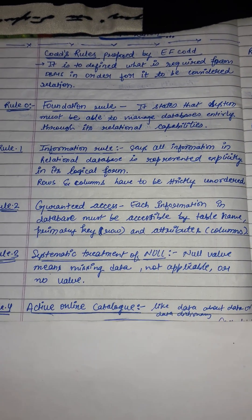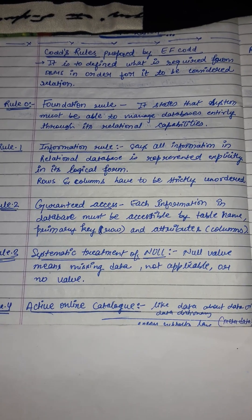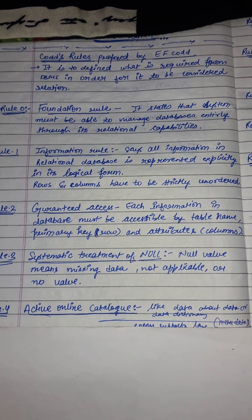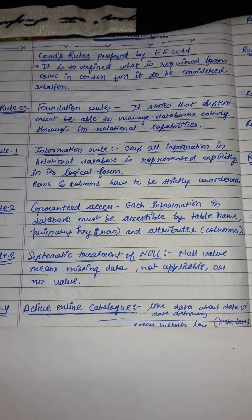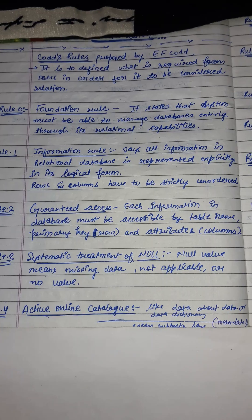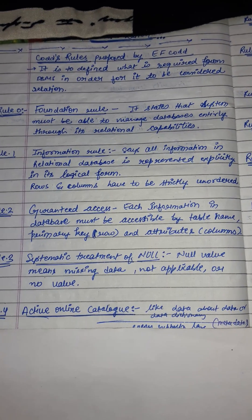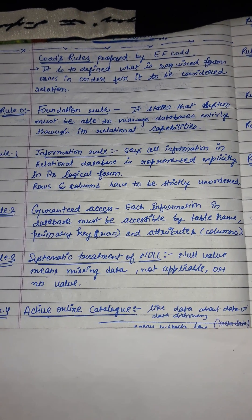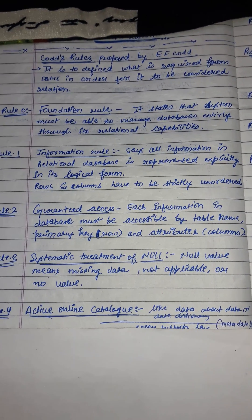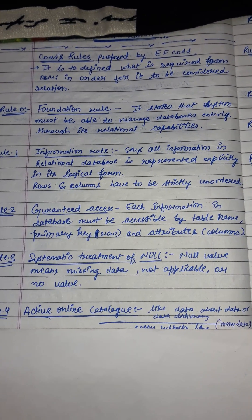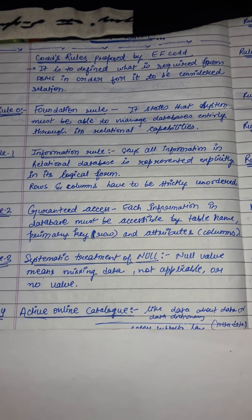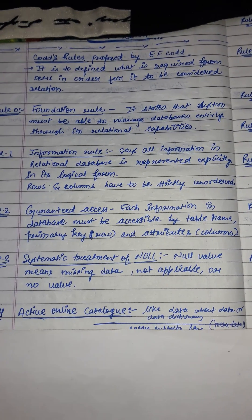Rule 4 is the online catalog, or dynamic online catalog based on the relational model. The system catalog is a collection of tables that the DBMS maintains for its own use. These tables hold the description of the structure of the database, and are created and maintained by the DBMS — like data about data, or a data dictionary — metadata.